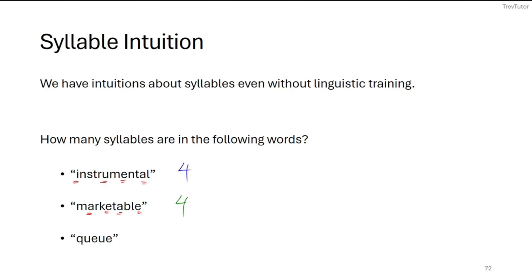So, in 'queue,' if we go by the vowel count, we would see there are four vowels there. But if we say 'queue,' it's just one syllable. So, it's not about how many vowels there are in the word, but how many vowel sounds there are in the word — that's going to tell us how many syllables there are. If we transcribe the word 'queue,' it's K-Y-U. We have just one vowel sound in there, so this is going to be one syllable.